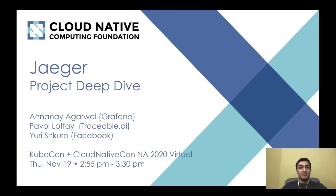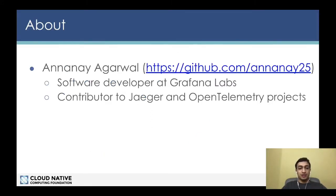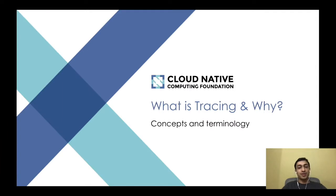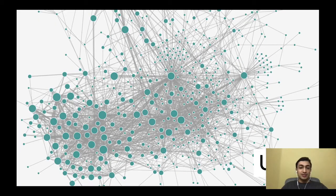Thank you, Yuri. Hi everyone, my name is Anna Nagarwal. I'm a software developer at Grafana Labs and a contributor to the Jaeger and OpenTelemetry projects. Today we're going to look at what distributed tracing is and how it fits into our debugging workflow. We'll also learn some concepts and terminology. This is a photo of Uber's internal architecture generated by Jaeger, and we can see that in a mature environment the number of microservices can run into hundreds or even thousands.